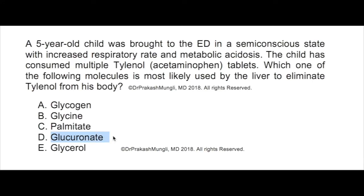Coming to option D: glucuronate. Glucuronate has a negative charge and is a derivative of glucose. Glucuronate is added to a molecule in the form of UDP-glucuronate — only the glucuronate is added, and UDP is released. Once glucuronate is added to a molecule that has a hydroxyl group, you are increasing the polarity of that molecule, making it hydrophilic so that it can be filtered by the glomerulus and appear in the urine.